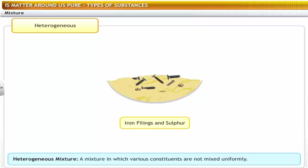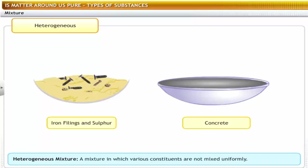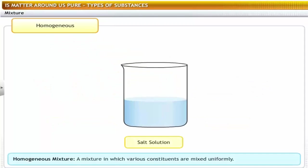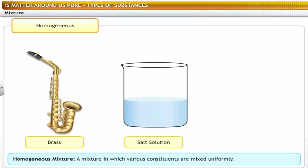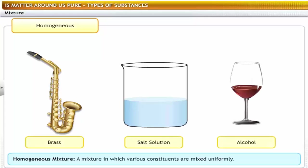Examples of heterogeneous mixtures are iron filings and sulfur powder, and concrete, which is a mixture of cement, water, sand, etc. The second type is a homogeneous mixture. Observe this solution of salt in water — it looks uniform throughout. Such a type of mixture is known as a homogeneous mixture. Brass — a mixture of copper and zinc — salt solution, and a solution of alcohol in water are examples of homogeneous mixtures.